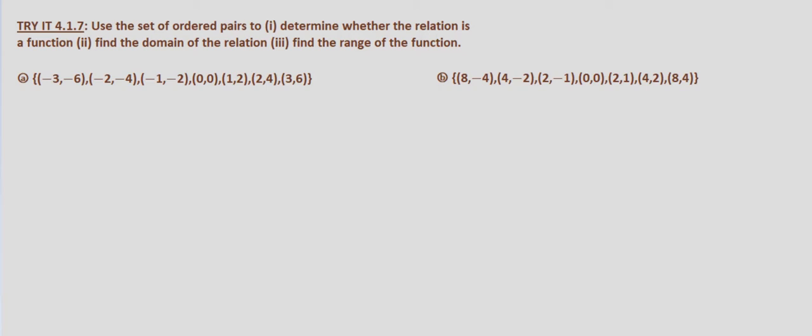So with part A, we're given the ordered pairs (-3, -6), (-2, -4), (-1, -2), (0, 0), (1, 2), (2, 4), and (3, 6).